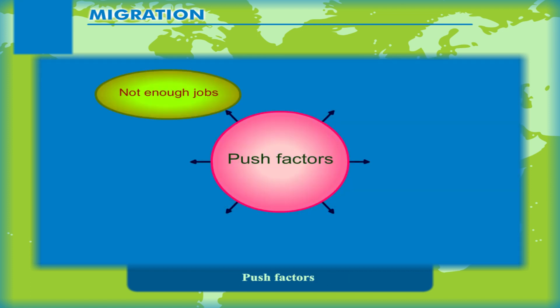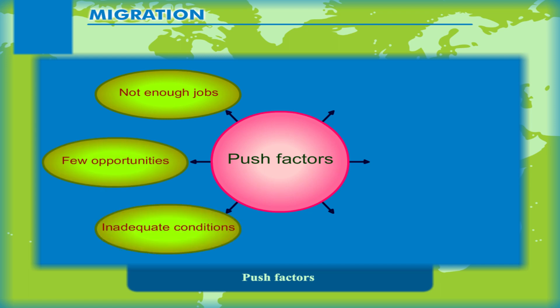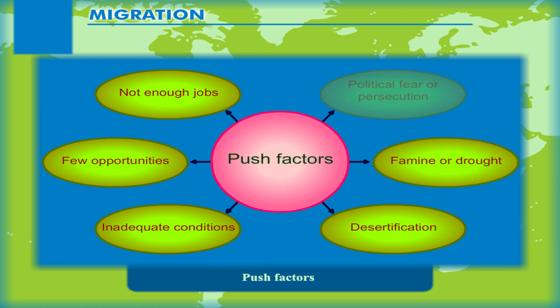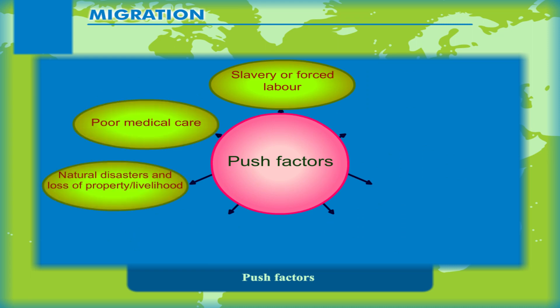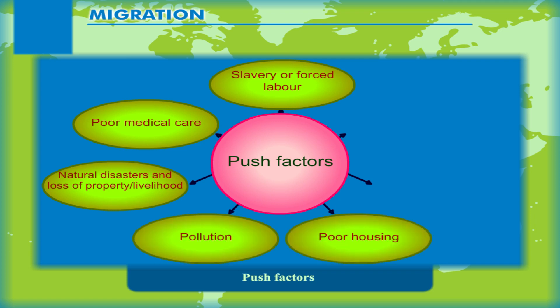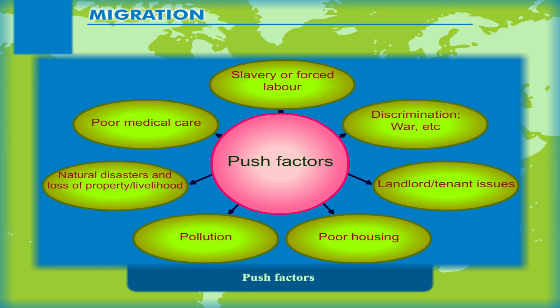Push factors include: not enough jobs, few opportunities, inadequate conditions, desertification, famine or drought, political fear or persecution, slavery or forced labour, poor medical care, natural disasters and loss of property or livelihood, pollution, poor housing, landlord or tenant issues, discrimination, war, etc.